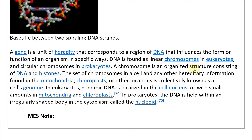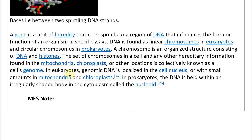A chromosome is an organized structure consisting of DNA and histones — proteins that the DNA spools around. The set of chromosomes in a cell and any other hereditary information found in the mitochondria, chloroplasts, or other locations is collectively known as a cell's genome. In eukaryotes, genomic DNA is localized in the cell nucleus, with small amounts in mitochondria and chloroplasts.